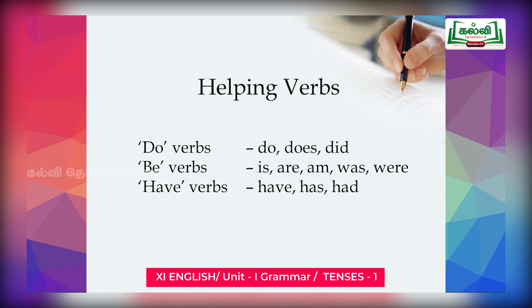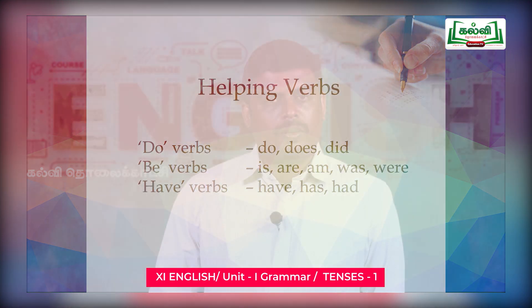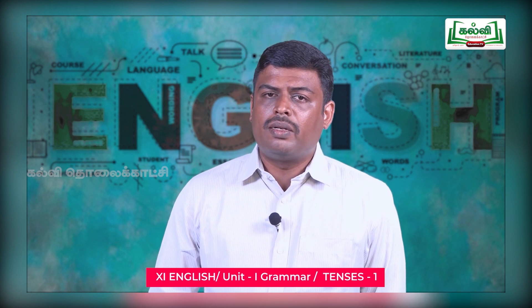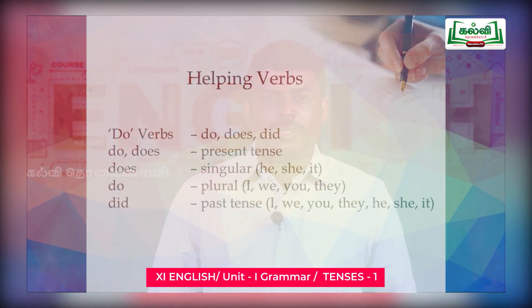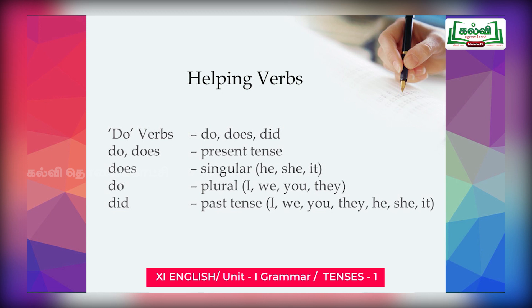Do verbs — there are three do verbs: do, does, and did. Be verbs — there are five different be verbs: is, are, am, was, were. Have verbs: have, has, had. So totally these eleven helping verbs play a major role in tenses. We should be very thorough with these eleven words. Do and does come under present tense, and did comes under past tense.